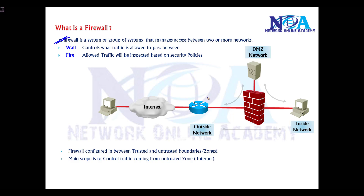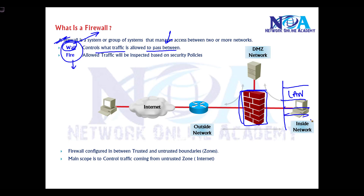Technically, a firewall is a device which manages the traffic between two or more different networks. The 'wall' refers to what controls what traffic is allowed to pass through. Here you have a firewall, with users sitting in the LAN — the local network — connecting to the internet, which is the outside network. There are also DMZs where FTP or HTTP servers are placed.